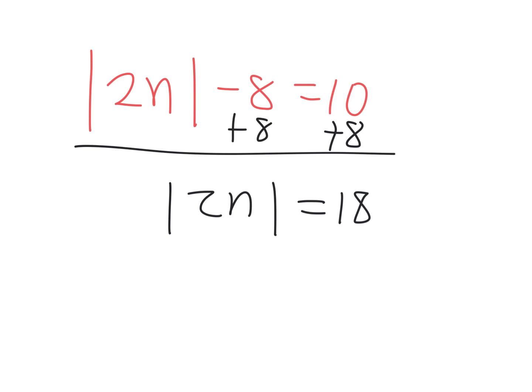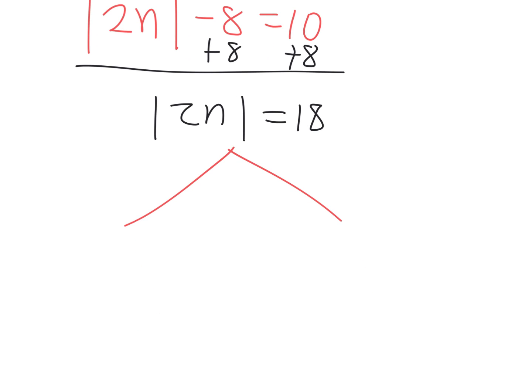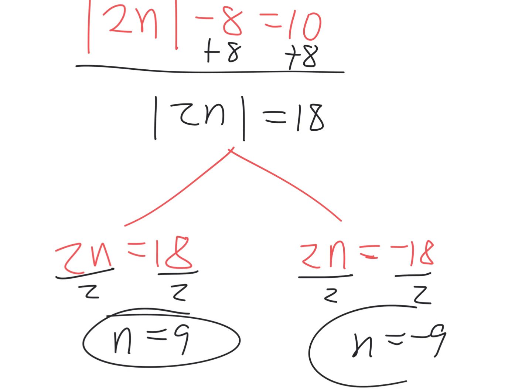Do you know what to do next? The split thing. Split 2n into two equations. What's the first one? 2n equals 18. And then right away, the other one is so like it. 2n equals negative, yes, the only difference is that negative. So we'll end up with two answers.